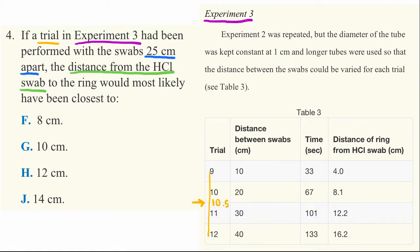And then they're saying what if the distance was 25 centimeters apart? So here we can see the distance between swabs. Well, what if we had added a trial that was 25 centimeters apart? What would the distance from the HCl swab to the ring be? And that's this column here.